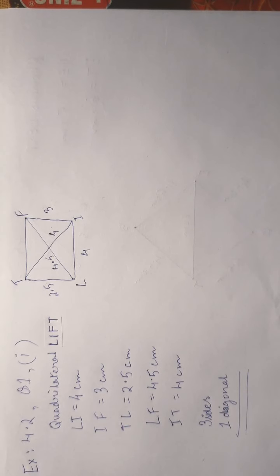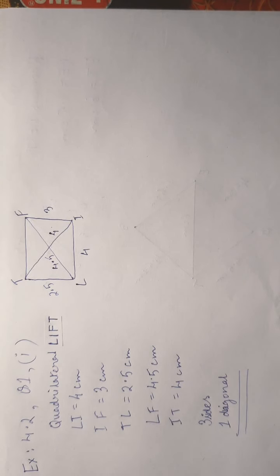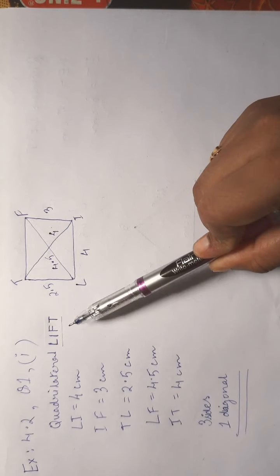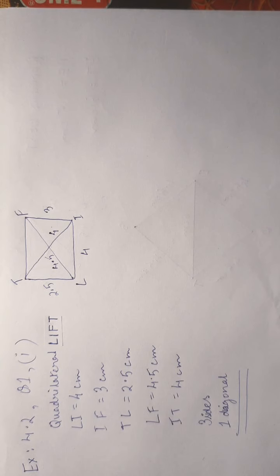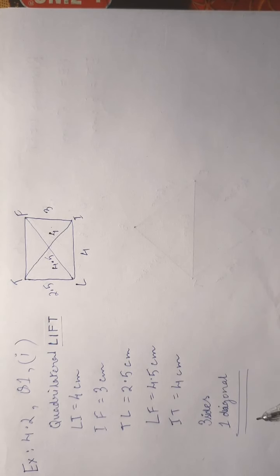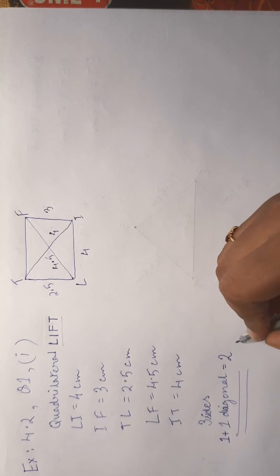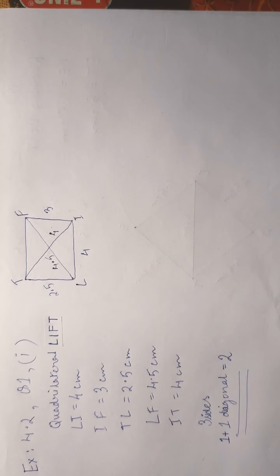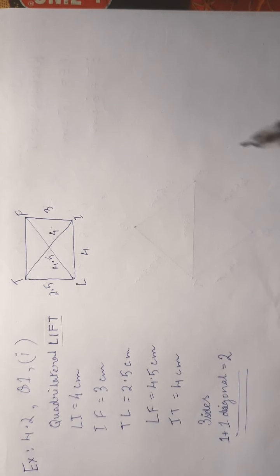Exercise 4.2, Question 1. We are asked to construct a quadrilateral named LIFT. In this exercise, we will learn how to construct a quadrilateral when three sides and two diagonals are given. First, we will draw a rough sketch to identify which are the sides and which are the diagonals.